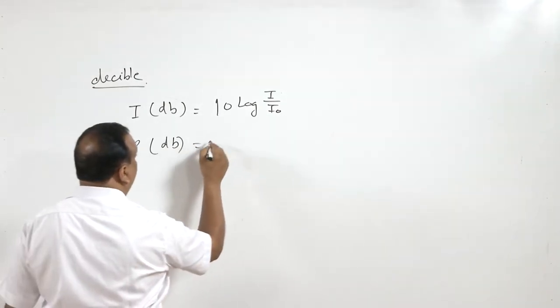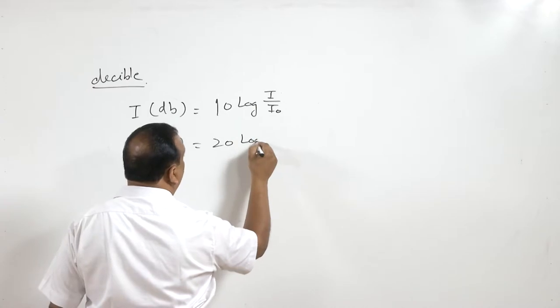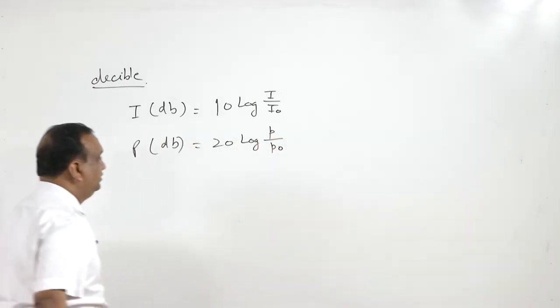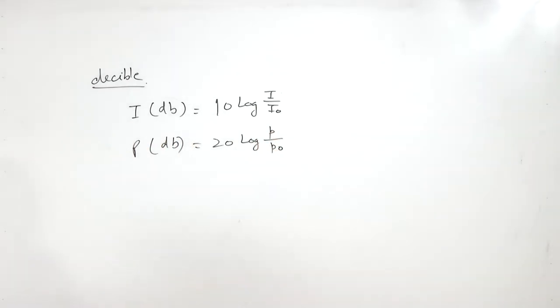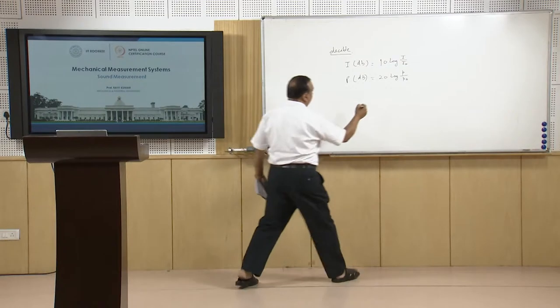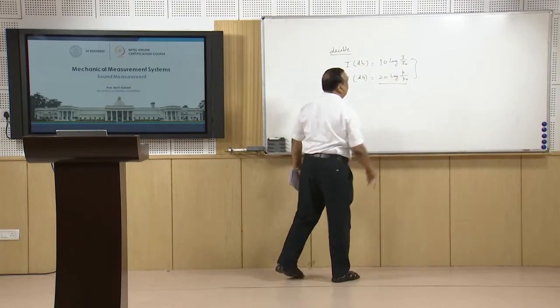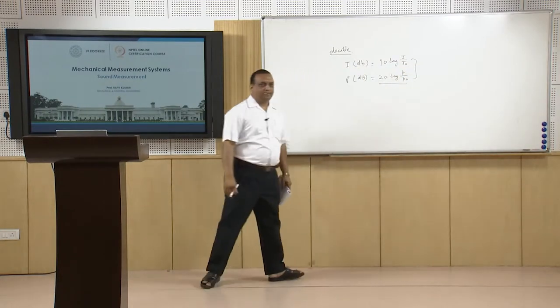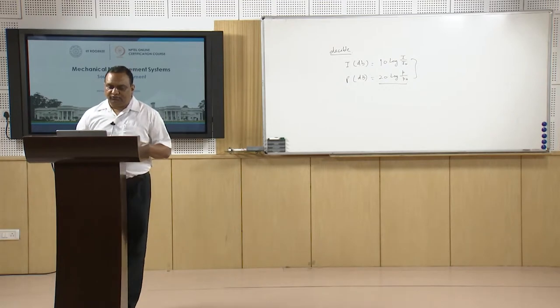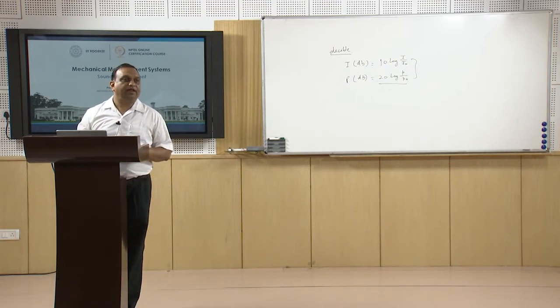The pressure level formula is 20 log(P/P₀), also called the sound pressure level (SPL). Both intensity level and pressure level are referred to as the sound pressure level, and they are equivalent expressions.